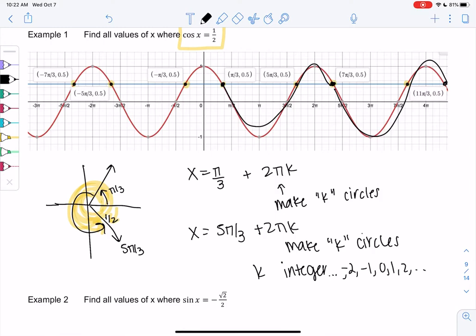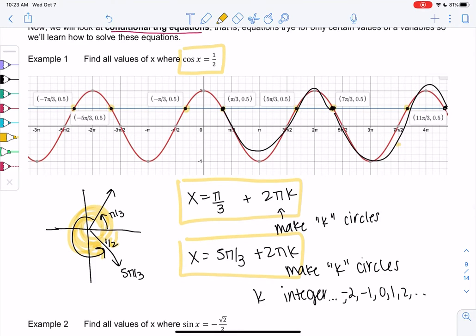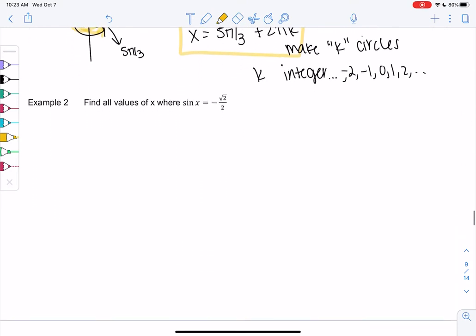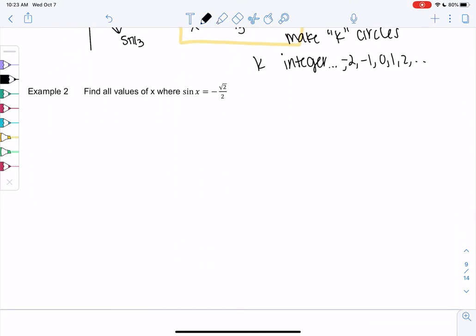K is an integer, meaning it can be negative two, negative one, zero, one, two. It's just saying we could do circles; the negatives would be going backwards. This is how we list all the possible solutions. This one got a little messy. Some of you may have liked the graph, some of you maybe didn't, but the graph was more to just convince you that there's lots and lots of solutions. I typically don't do the graph.